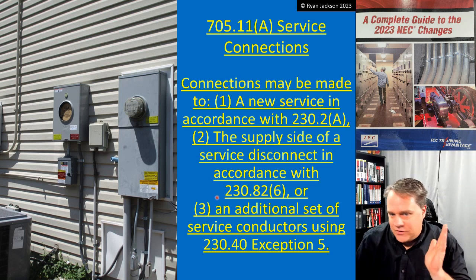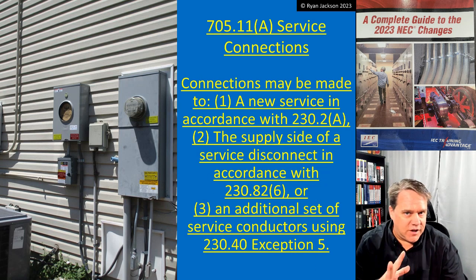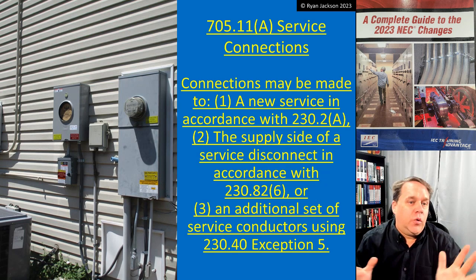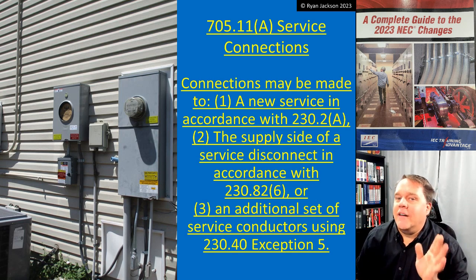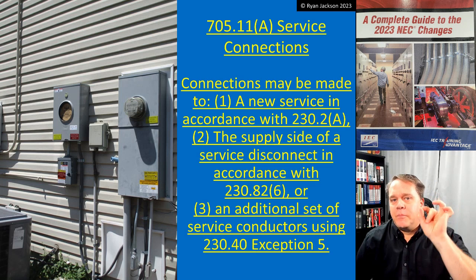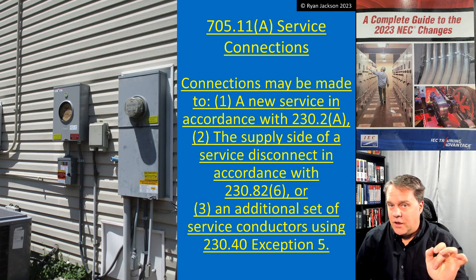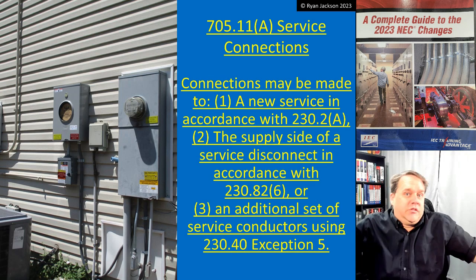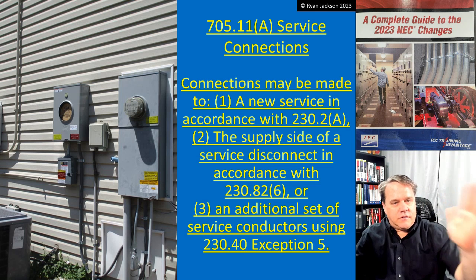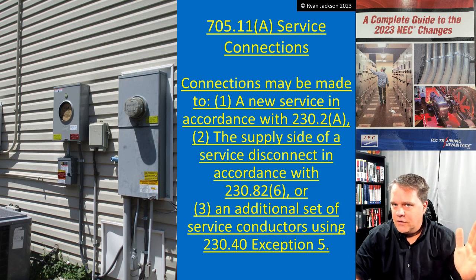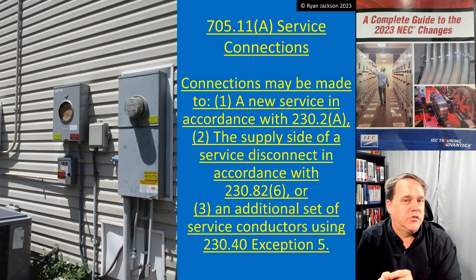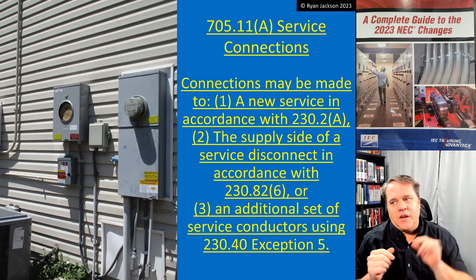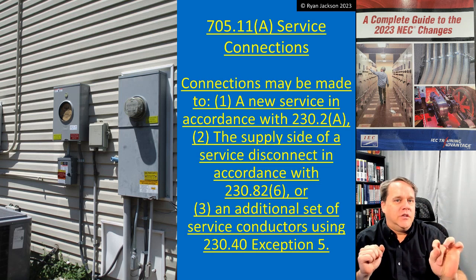How many service disconnects can I have? A lot of people quickly say six, and that's true — you can have six service disconnects per service. But it's not per building. If you have a massive building with two services, you could have six disconnects on one side and six on the other, with signage. If you read 230.72, it's six service disconnects per set of permitted service entrance conductors. The general rule in 230.40 says each service can only supply one set of service entrance conductors — but there are five exceptions to that.